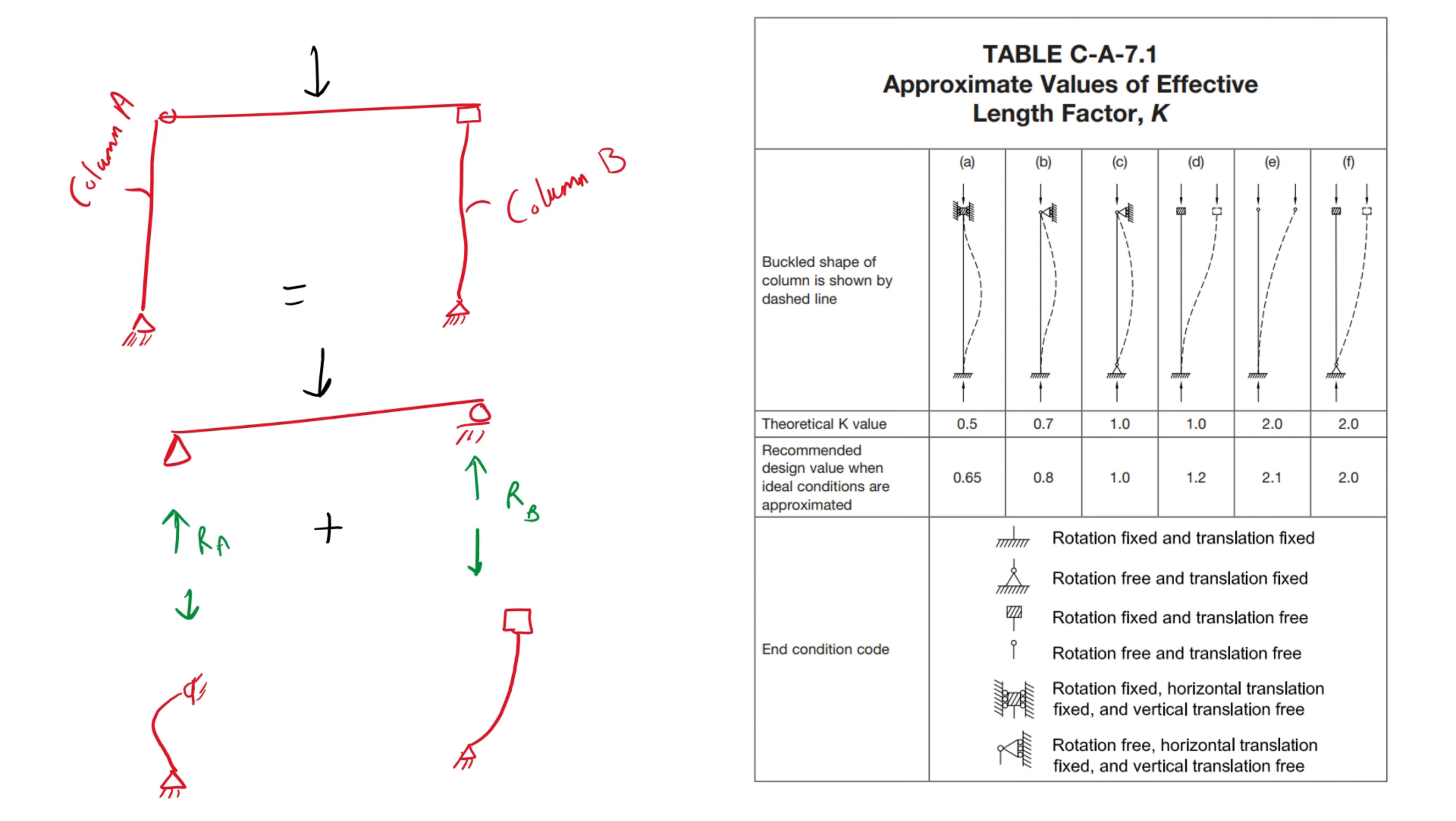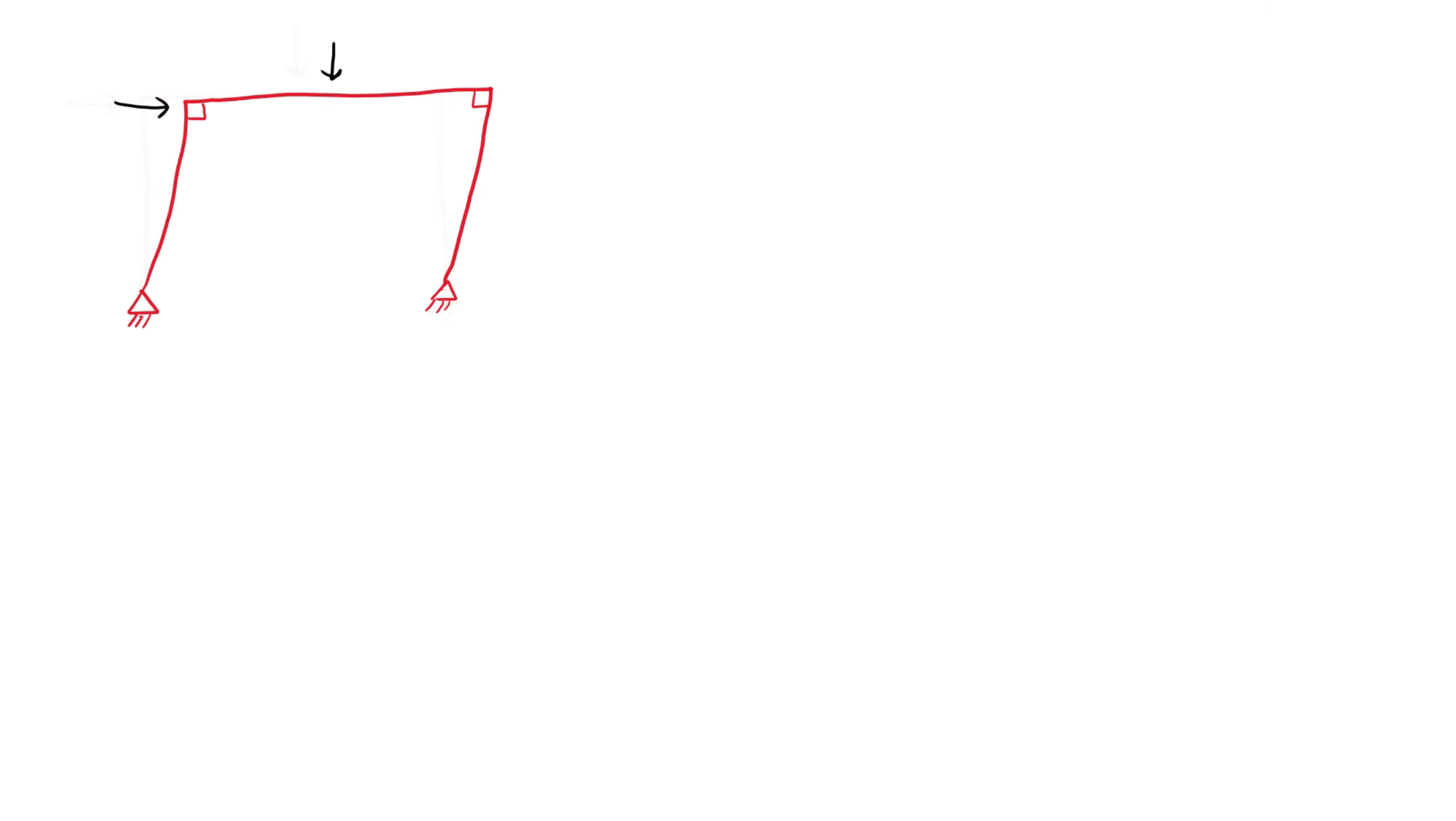The following table shows the different ideal support conditions and how they affect the way a column buckles.